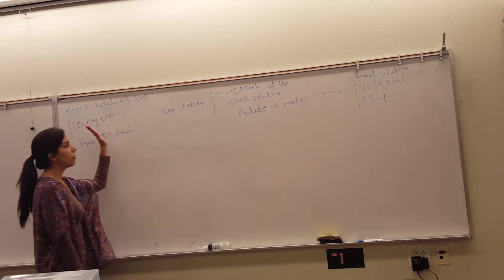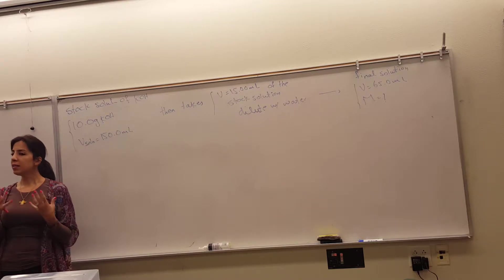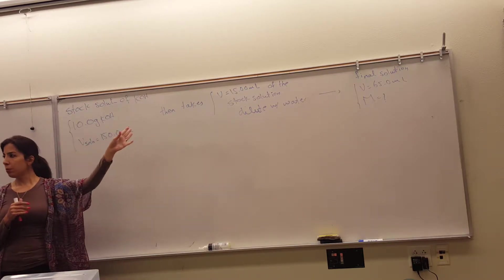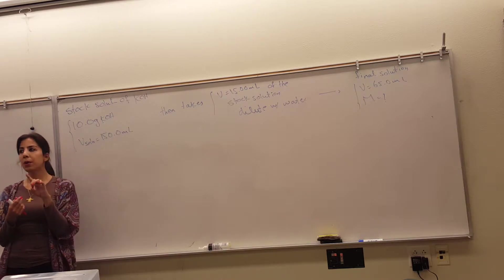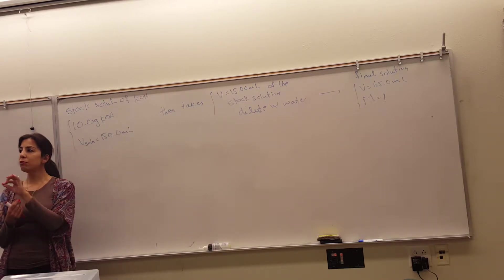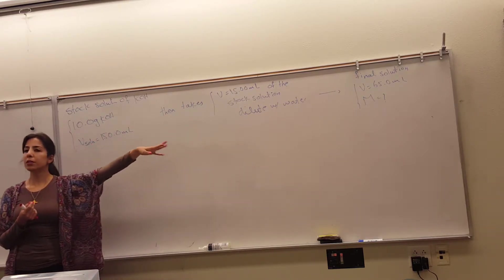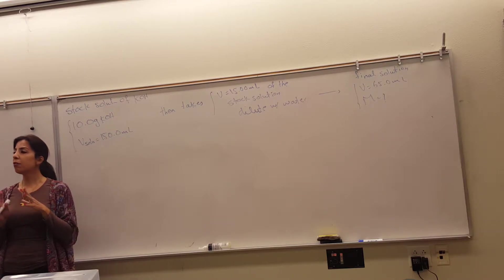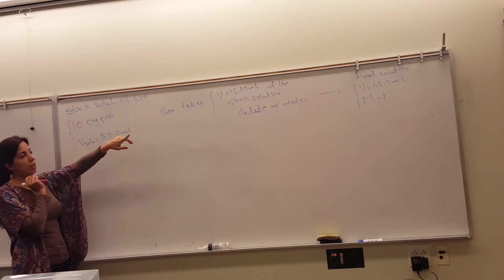Since it's all potassium hydroxide from beginning to end and the student is only doing dilutions — just adding more water — that tells you you're going to use M1V1 = M2V2. As soon as you see the word 'dilution,' that tells you to use M1V1 = M2V2. Keep in mind that to use this formula, you must be working with only one type of solution. You can't have two different compounds during dilution — if you do, you have to write a chemical equation and do stoichiometry.